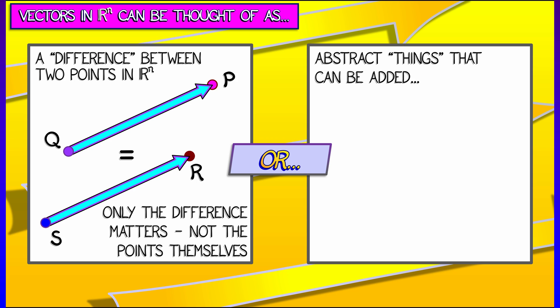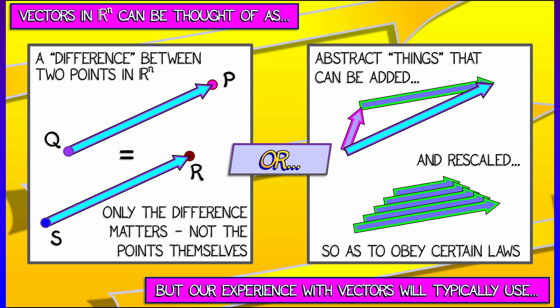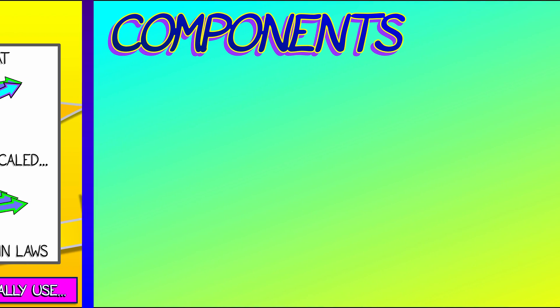There's a much more algebraic and abstract approach. Vectors are objects that can be added together and rescaled so as to obey certain algebraic laws. I'm not going to go over what those are right now because our approach to vectors is going to be a bit more grounded and explicit in terms of components,